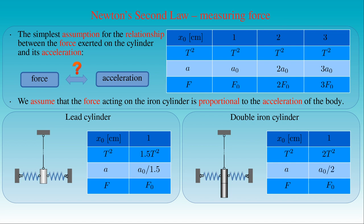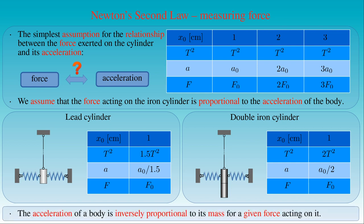We have seen that the same amount of force acts on the bodies in these experiments, since the elastic forces in the stretched and compressed springs at the same maximum amplitude are the same. The experiments show that the same force can produce accelerations of the lead and the double iron cylinders which are two-thirds and one-half of the acceleration measured in the original setup. This can simply be attributed to the fact that the masses of the lead and the double iron cylinders are 1.5 times and 2 times bigger than the mass of the original iron cylinder. We can conclude that the acceleration of a body is inversely proportional to its mass for a given force acting on it.